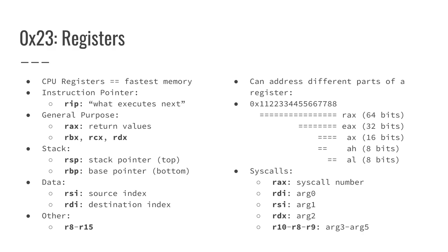Whenever main calls another function like check_authentication, a new stack frame has to get created so that all the variables and data that check_authentication needs to work with can be kept separate from all of main's local stack variables.